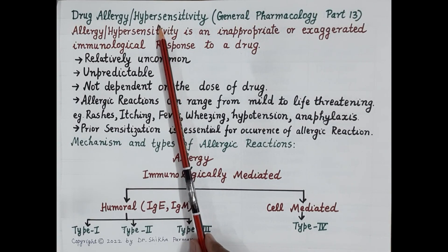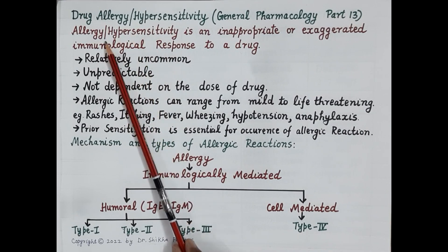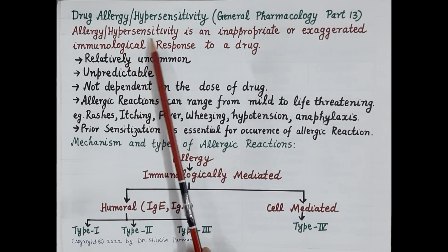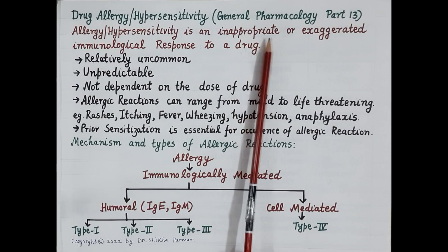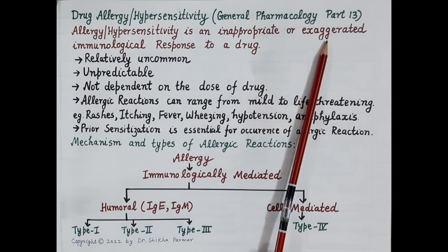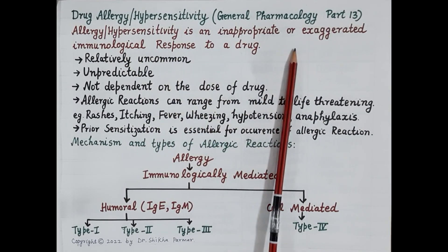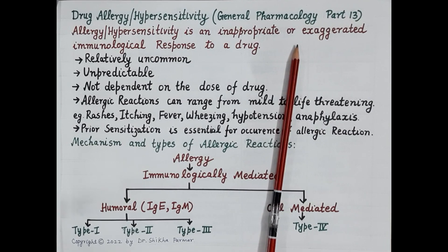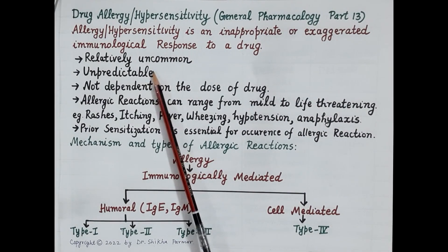Allergy, also termed as hypersensitivity, is not a normal response. Allergy or hypersensitivity is an inappropriate, unnecessary, or exaggerated — that is exceedingly high — immunological response to a drug. Here, the body feels the drug is a harmful substance, an antigen, so the immune system gets activated by the drug and produces symptoms ranging from mild conditions like skin rashes to life-threatening conditions like anaphylaxis.